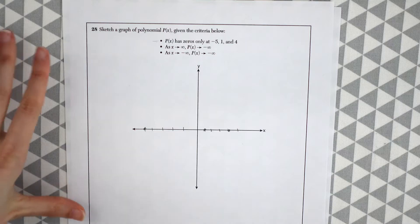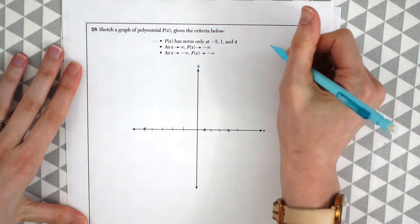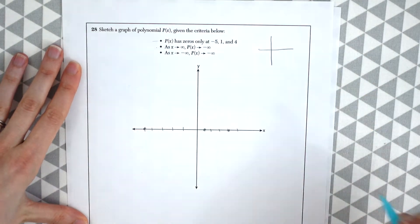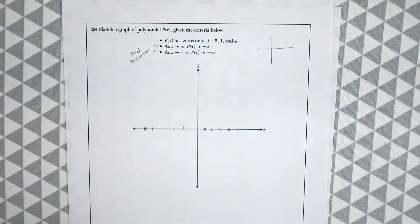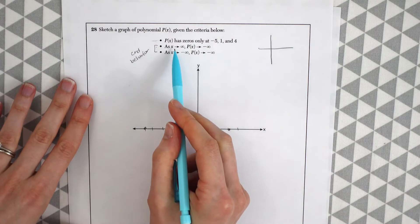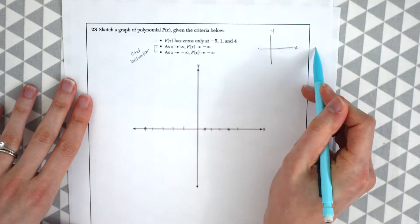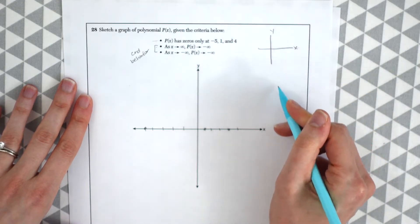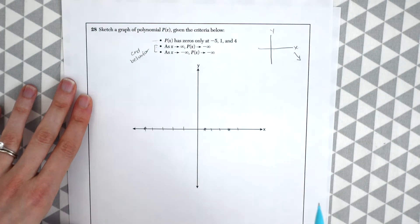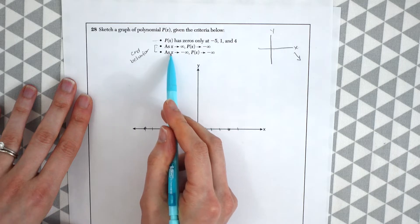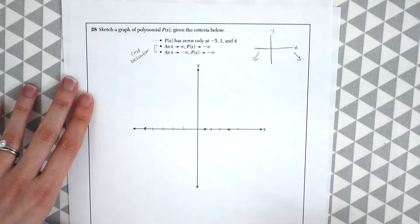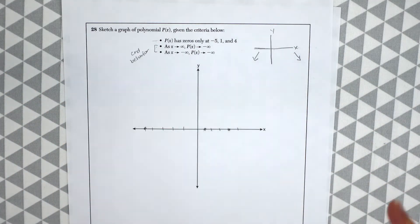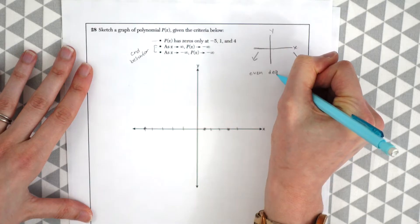Now let's look at the next bullet points, which tell us the end behavior of our polynomial. This gives us insight into what the polynomial looks like and its degree. As X approaches infinity, Y is going to negative infinity — so the graph ends going downward. As X approaches negative infinity, Y is also approaching negative infinity. So the end behavior is facing down on both sides, which means this must be an even degree polynomial.